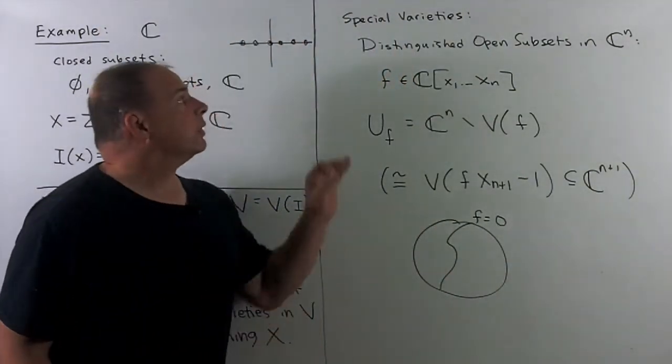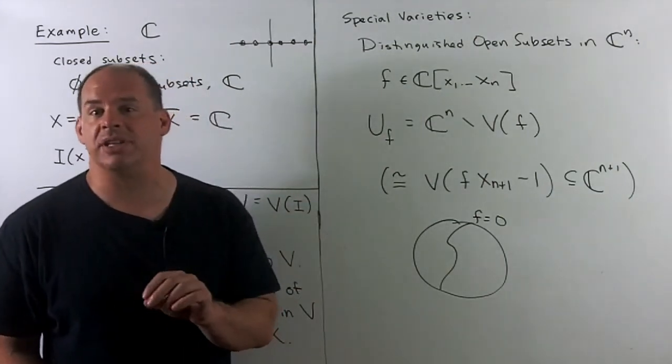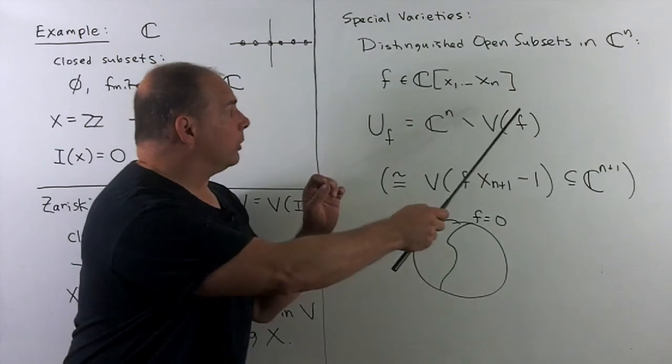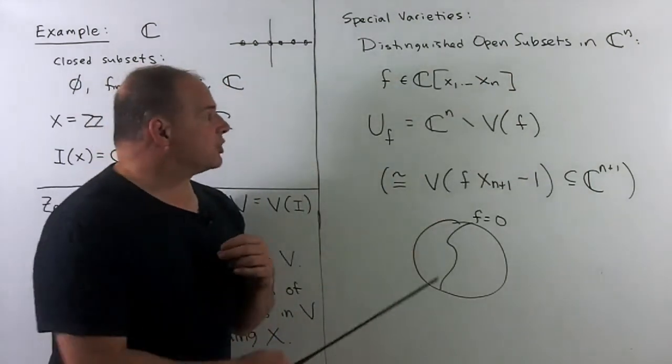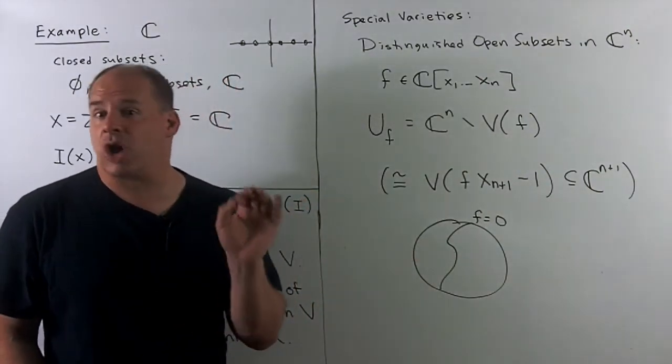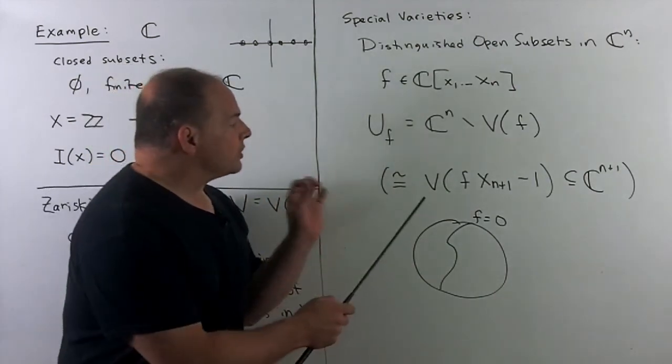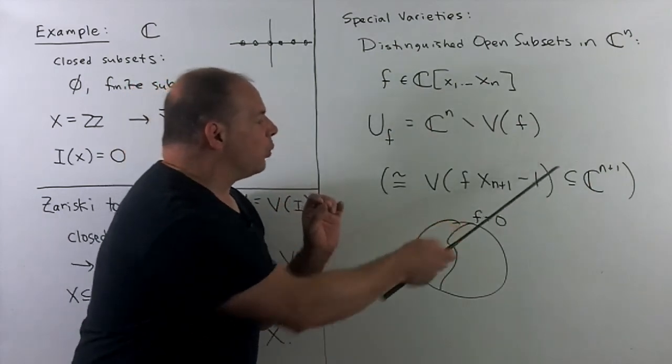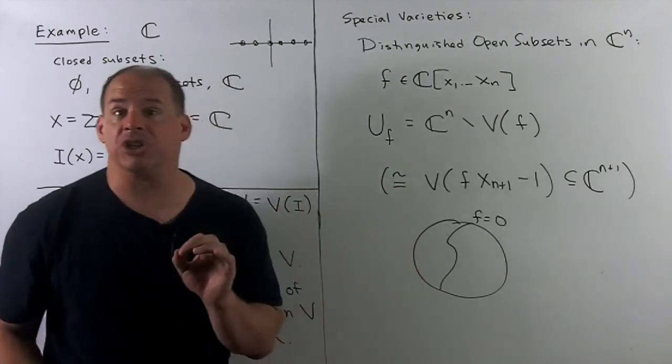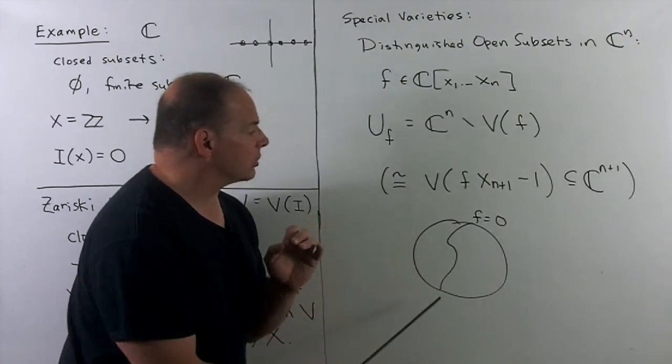To finish, we want to note a special class of varieties. These are going to be the distinguished open subsets in CN. Here, we'll just pick some non-zero F in our polynomial ring. Then U sub F is just going to be CN minus the variety for F. Now, this picks up the structure of a variety by looking at this sitting inside of CN plus 1. So this is going to be space of all points of CN plus 1, where F times extra coordinate X sub n plus 1 minus 1 vanishes. And then we have a picture. That's what this open subset looks like.